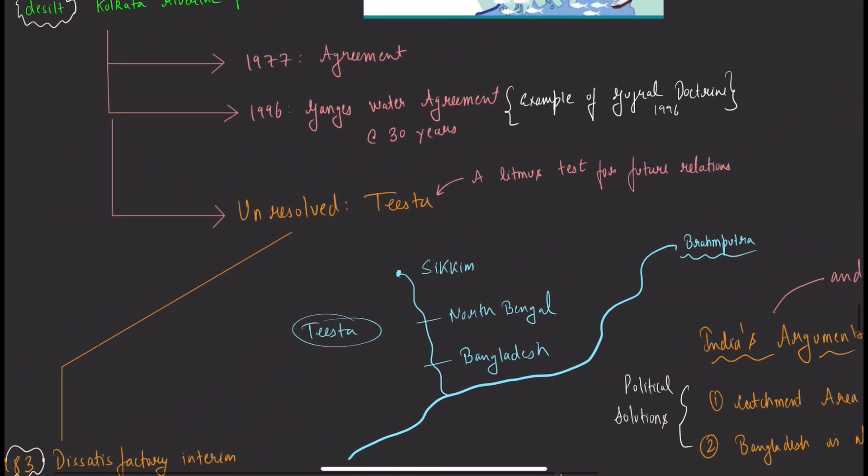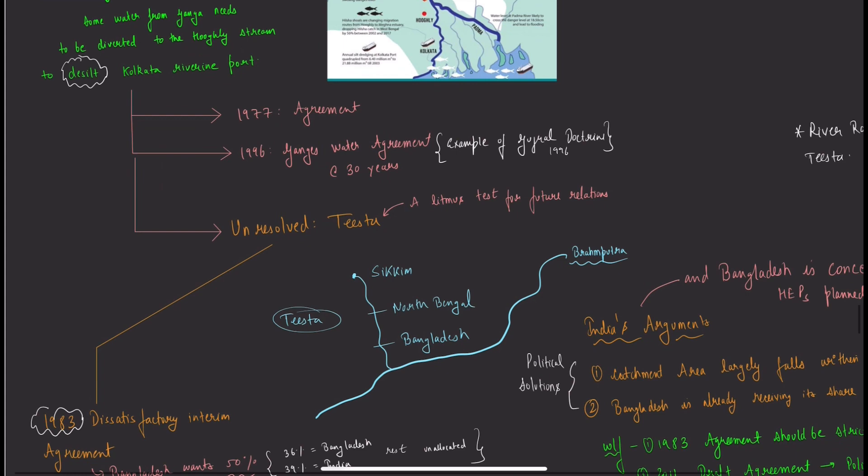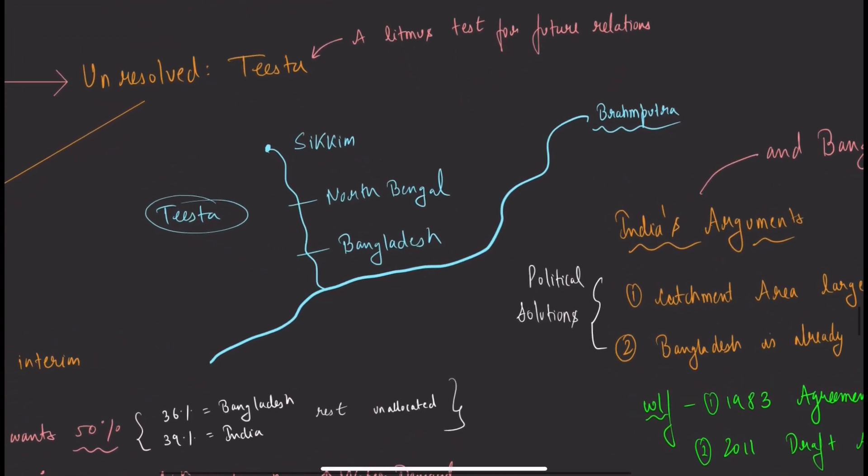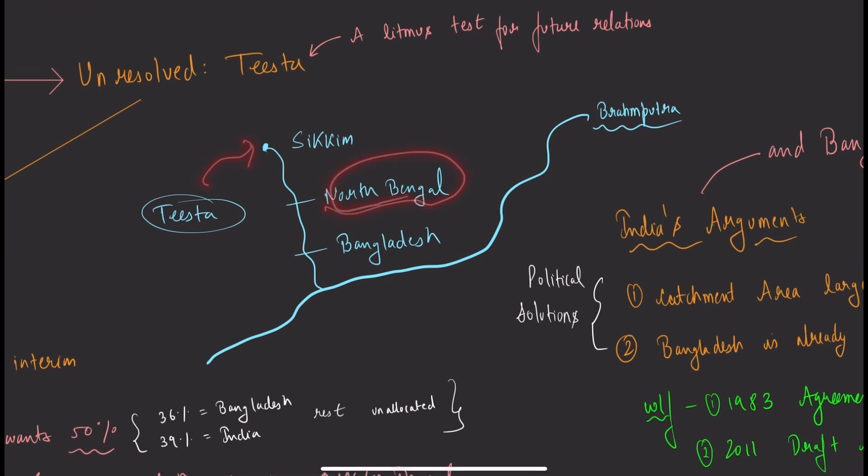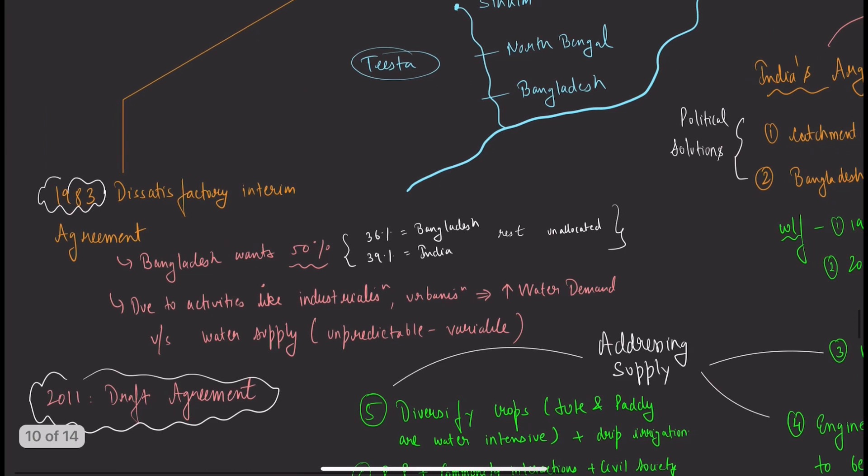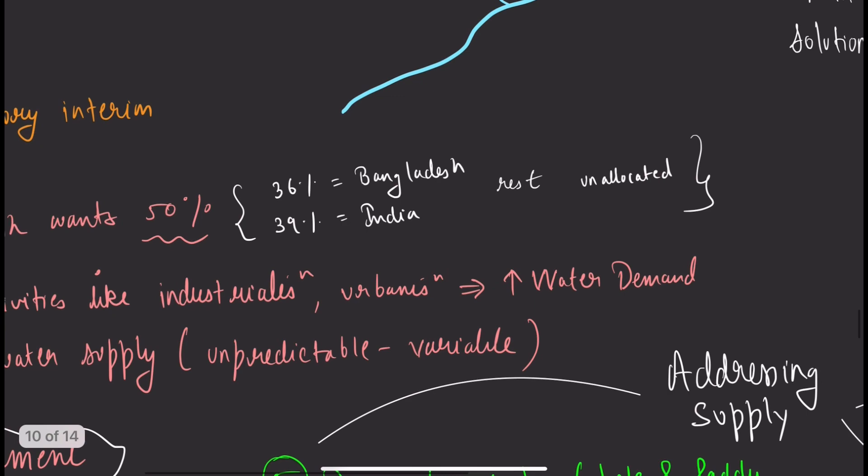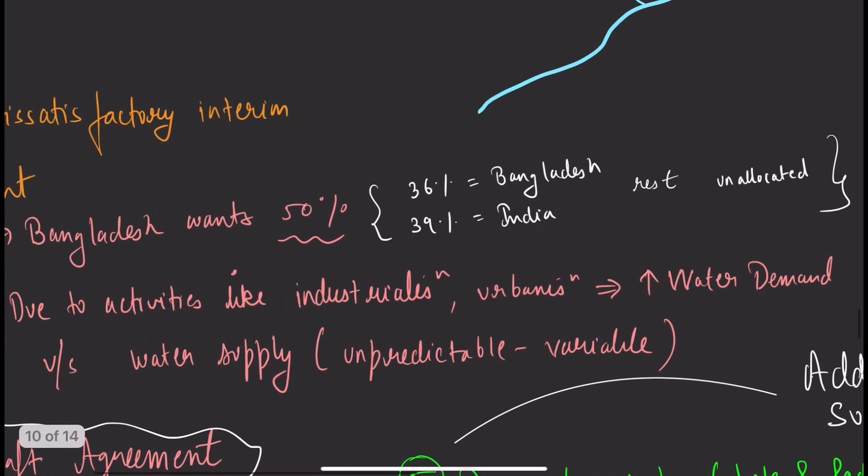The Ganges water agreement resolved the Farakka dispute, but a new issue started with the Teesta River. Teesta originates in Sikkim, goes through Bengal to Bangladesh, and meets the Brahmaputra River. In 1983 there was an agreement, but it wasn't approved by Bangladesh. Bangladesh wanted 50% of the water, but the agreement allocated 36% to Bangladesh and 39% to India.